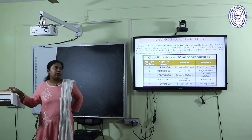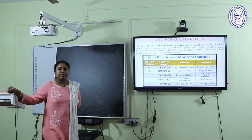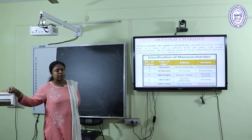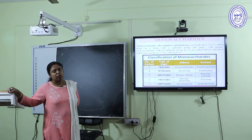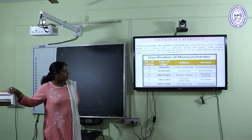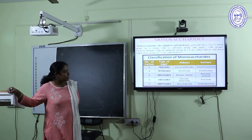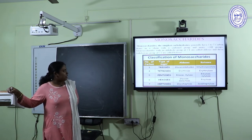Let's discuss monosaccharides in detail. They are simple in structure and do not require any digestion. They are readily absorbed into the bloodstream. Examples are glucose, fructose, and galactose. All monosaccharides having three to seven carbon atoms in their structures are monosaccharides. Those with three carbons are termed trioses — for example glyceraldehyde (aldose) and dihydroxyacetone (ketose). Four carbons are tetroses — erythrose (aldose) and erythrulose (ketose). Five carbons are pentoses, six are hexoses, and seven are heptoses.